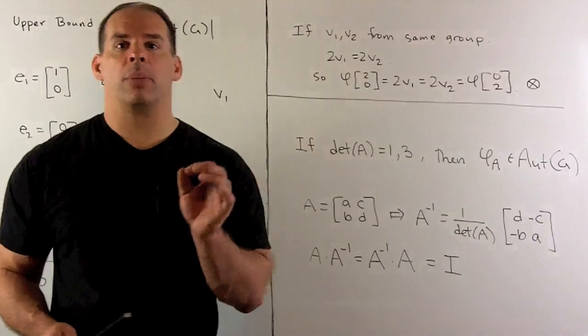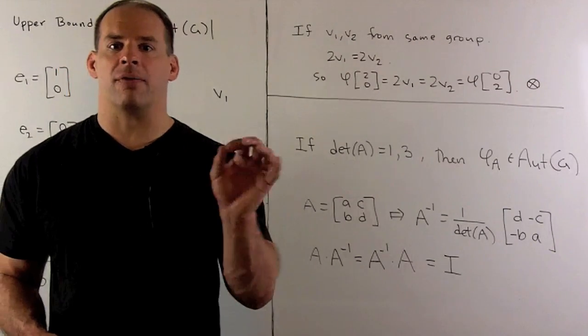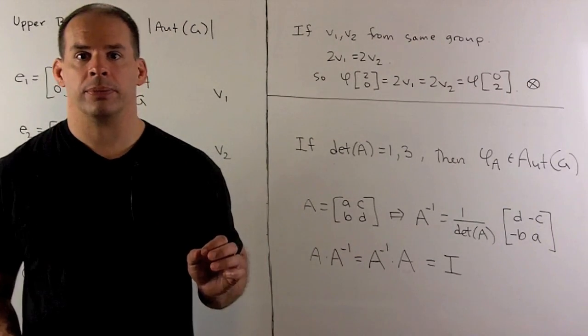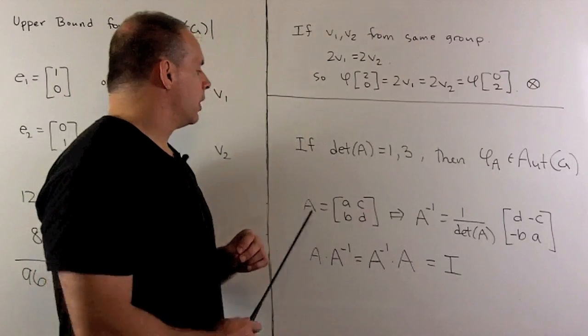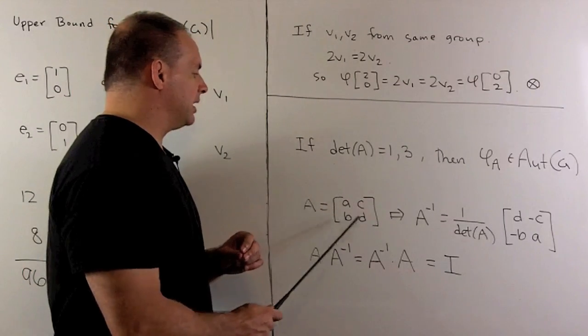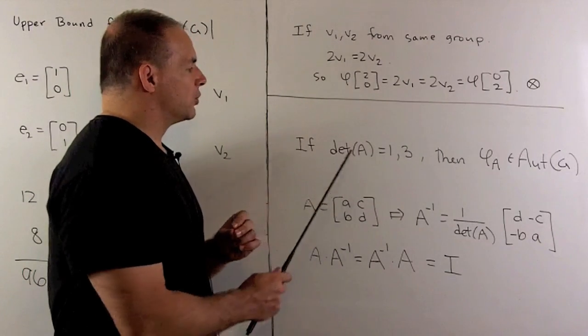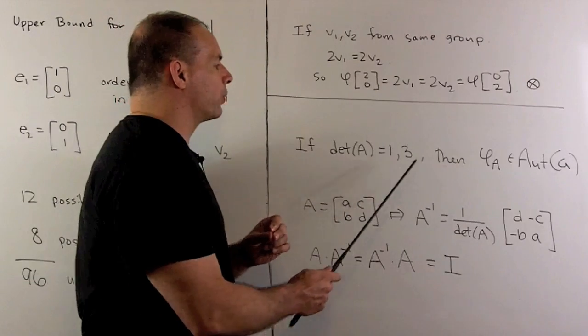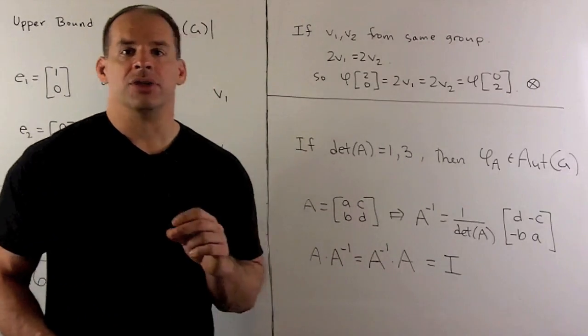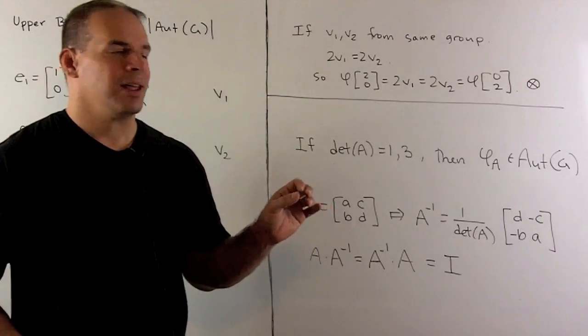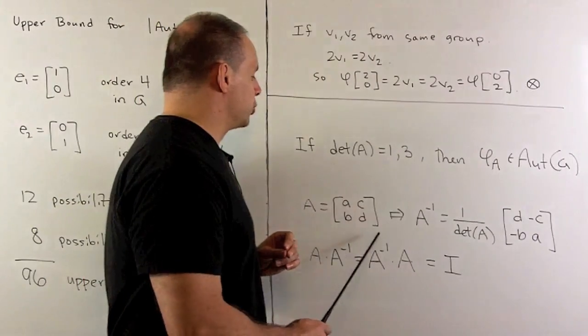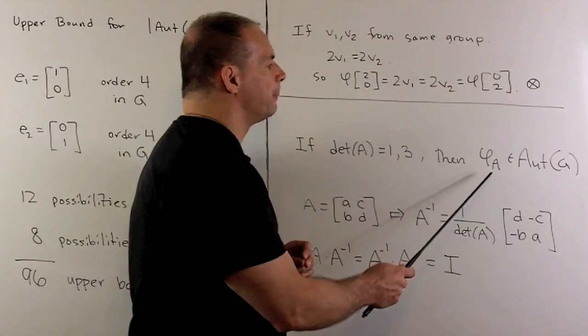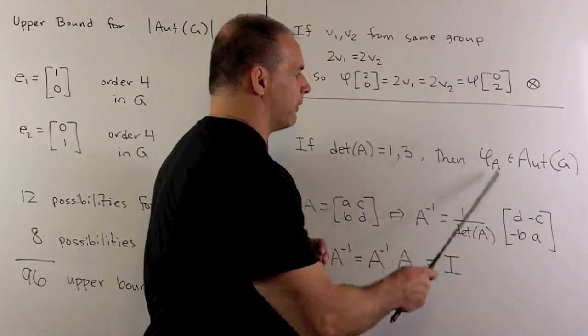Now, to get the lower bound, we'll consider a certain subset of our automorphism group. So, I want to consider all matrices A, C, B, D, where the determinant of A is equal to 1 or 3. So, if I have that condition, then the associated linear transformation, phi sub A, is going to be an automorphism of our group.